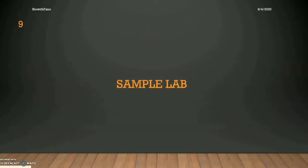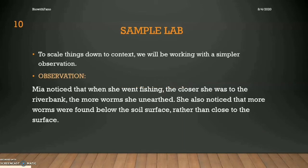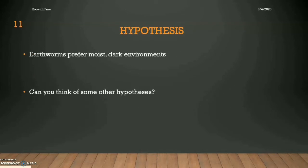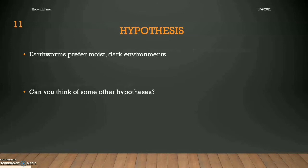Now that you've seen a present-day example, let's scale it back to something a little bit simpler. Mia noticed that when she went fishing, the closer she was to the riverbank, the more worms she noted. She also noticed that more worms were found below the soil surface rather than close to the surface. From this observation, we can formulate the hypothesis that earthworms prefer moist, dark environments. So we can establish an aim such as to determine if earthworms respond positively or negatively to light.